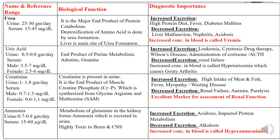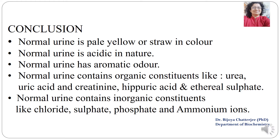So this gives you the idea of why NPN compounds are so important and what are their biological roles as well as their diagnostic importance. In conclusion, normal urine is pale yellow or straw in color, has acidic pH, and has aromatic odor. The normal urine contains organic constituents like urea, uric acid, creatinine, hippuric acid, and ethereal sulfate. The inorganic constituents are chloride, sulfate, phosphate, calcium, and ammonia.